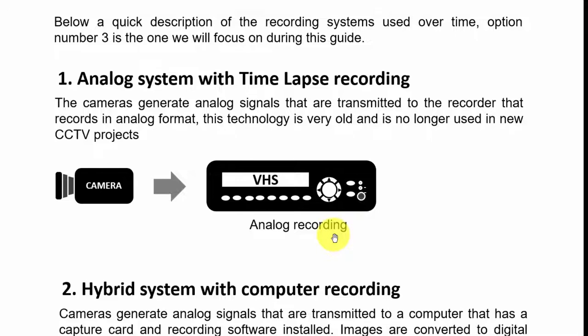There is no digital here, there is no IP here — it's an analog camera with an analog cable sending an analog signal to a VHS. That's old technology. You don't find it much anymore, but it's still available somewhere and you should at least know that technology exists.